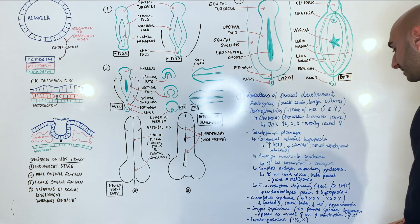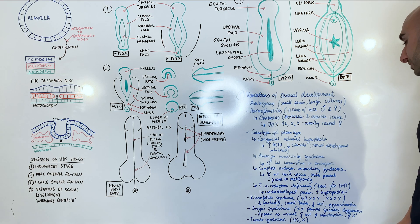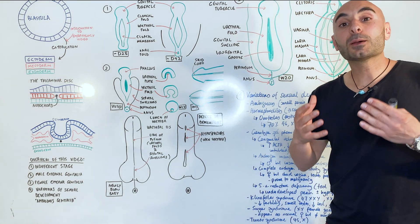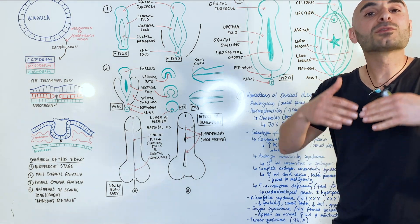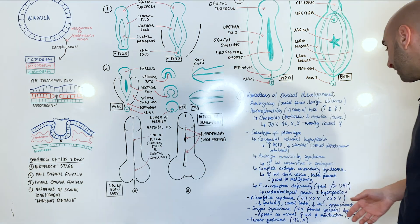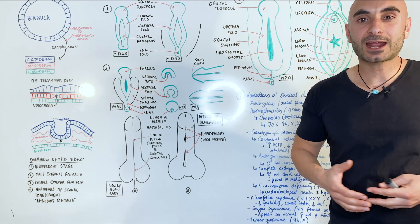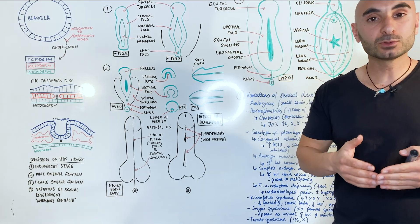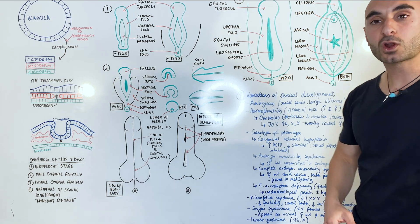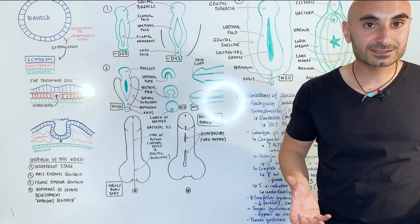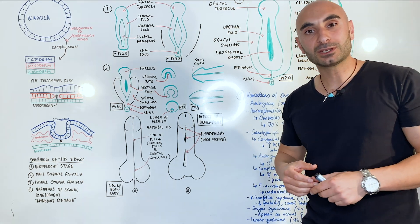Swyer syndrome is an XY female gonadal dysgenesis. You can appear as a normal female on the outside to people. However, you won't menstruate and you won't develop secondary female characteristics. So people that have Swyer syndrome might not ever have their breasts develop and will never get their period.